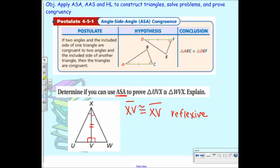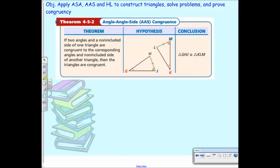Questions on ASA? Angle-angle-side, AAS, means that it needs to go in the order of angle-angle-side. So in this picture we've got HJG — angle G, angle J, and then this side right here. This would work for angle-angle-side. Yesterday we would have said you can't tell these are congruent because it wasn't ASA, but here we can use angle-angle-side.